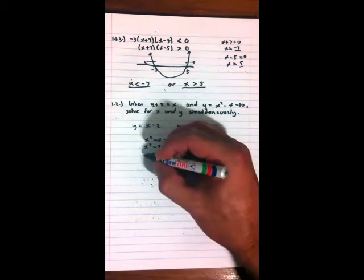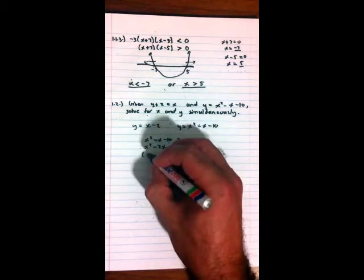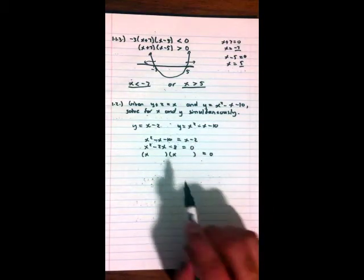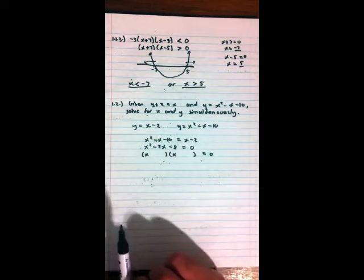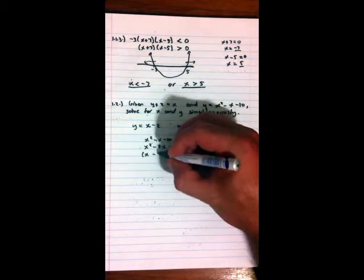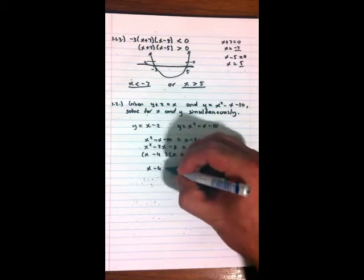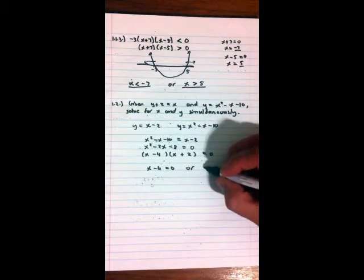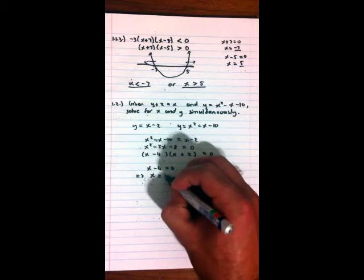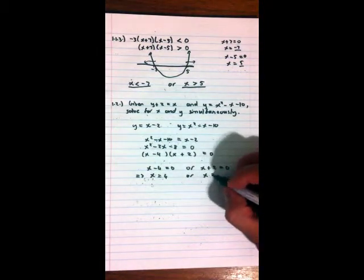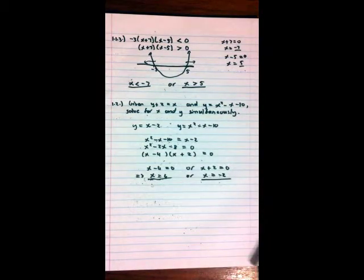Now, all we need to do is factorize that into two nice little brackets. x times x will give us that x squared. And again, now we're looking for the factors of negative 8 that, when added or subtracted, will give us negative 2 as a result. And that will be negative 4 and positive 2. So again, we have that x - 4 = 0, or x + 2 = 0, which implies that x = 4, or x = -2. As easy as that. Done.